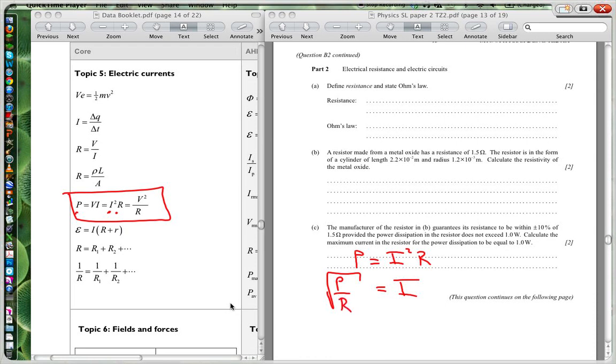Now, I'm wanting my maximum current when I have 1 watt. So when am I going to get my maximum current? When my resistance is going to be at its lowest, because we're dividing by the lower value.